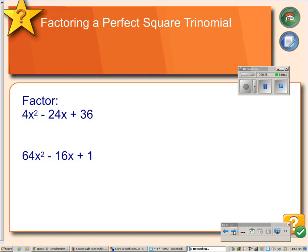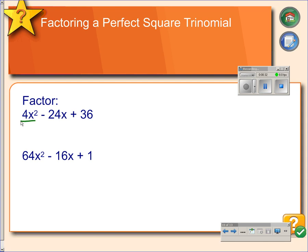So we begin with our perfect square trinomials. These are perfect square trinomials because the first term is a perfect square, the last term is a perfect square, and the middle term is the square root of the first term times the square root of the last term doubled. So this would give us 12x. If we double that, we get 24. That's why this is a perfect square trinomial.